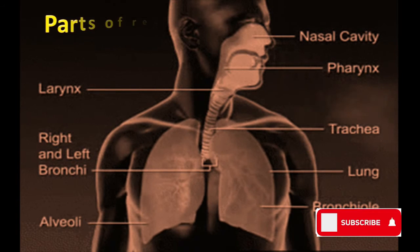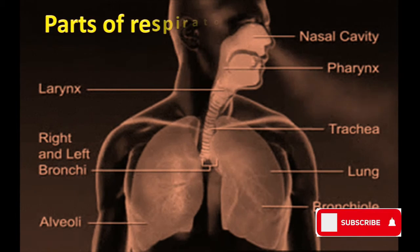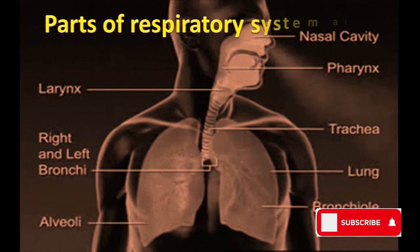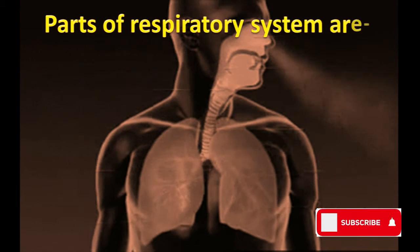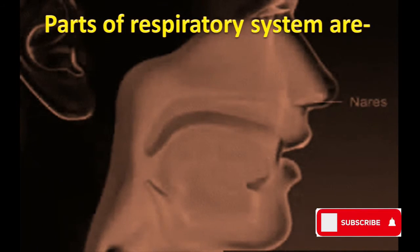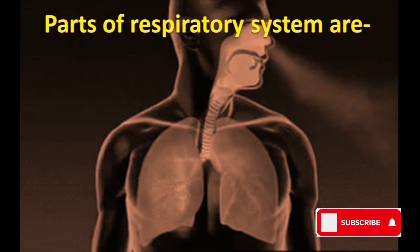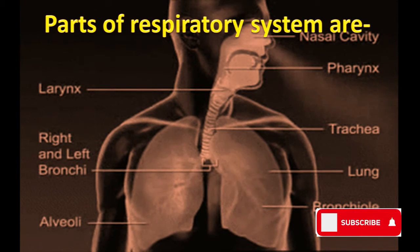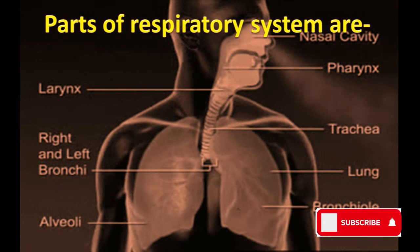Parts of the respiratory system are: nasal cavity, pharynx, larynx, trachea, lungs, bronchioles, bronchi, and the smallest unit of the lungs — alveoli.